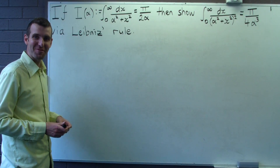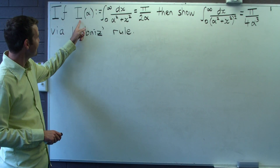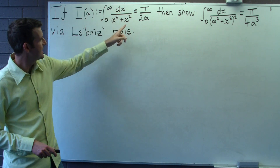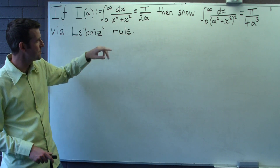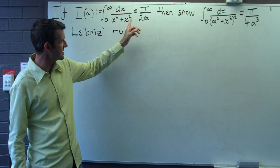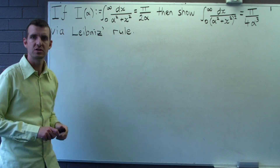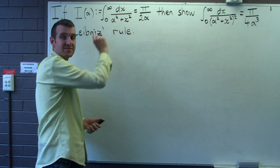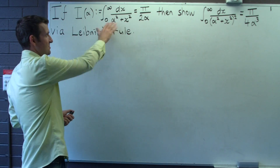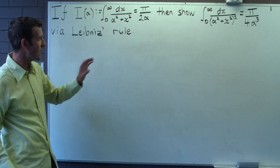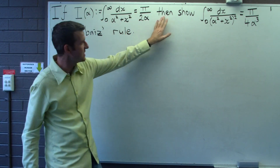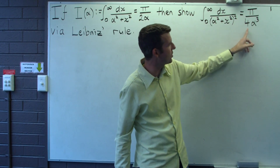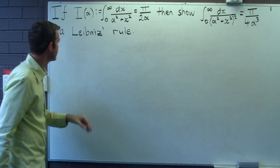Let's have a look at the following problem. We're given a function I, which is a function of alpha defined using this integral, and we're told that this integral equals π/(2α). You can verify that by making a substitution x = α tan θ and integrating. We're asked to use this information to show that this integral equals π/(4α³).